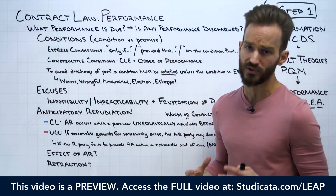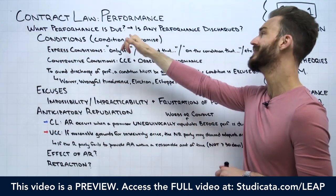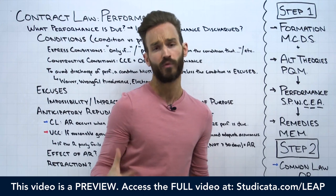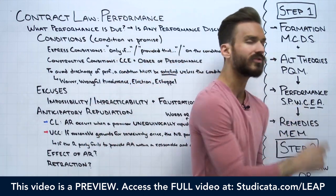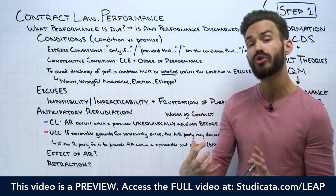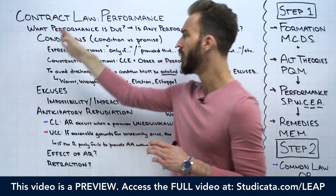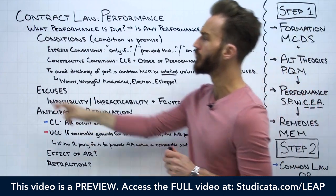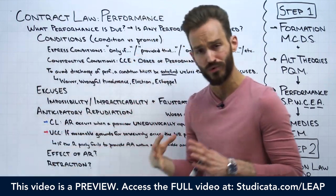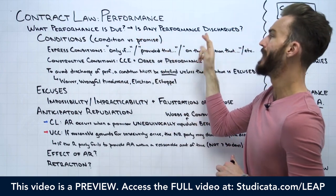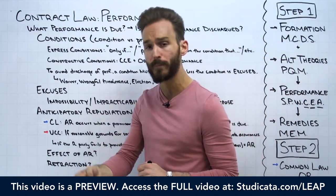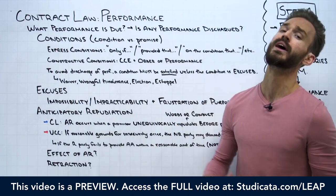When we said we were looking at a performance analysis, there are really two questions: what performance is due, and is any performance discharged? Our first lessons focused more on the first question — substantial performance versus perfect tender, the parol evidence rule, and warranties — defining what performance is due under the contract. In this video, when we're thinking about conditions, excuses, and anticipatory repudiation, we're moving on to the second part: whether any performance can be discharged, where non-performance of that legal duty will be excused.